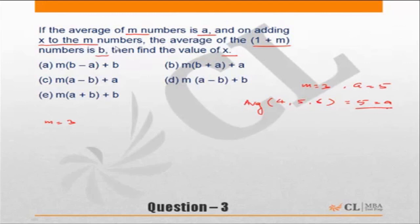On adding x to the m numbers, let me say I had another number called 7. Let me say x is equal to 7. The average of 1 plus m numbers is b. So the average of these four numbers—4, 5, 6, and 7—the 1 plus m is 1 plus 3, which is 4. These four numbers is 5.5, so this is equal to b.